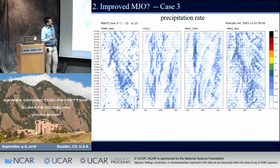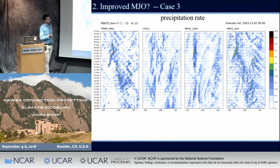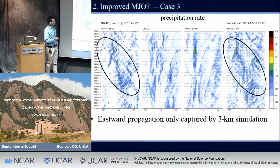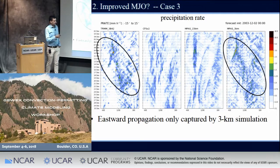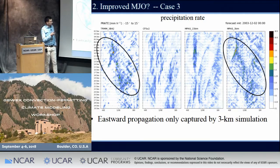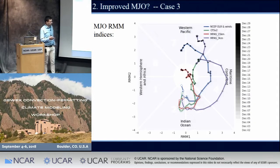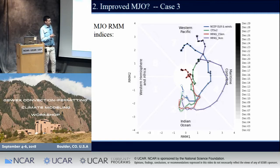Finally, here's our third MJO case, characterized by a very broad packet of precipitation moving eastward. Both CFS and the 15-kilometer MPAS primarily produce stationary precipitation, while in the 3-kilometer run we see a really nice broad eastward-propagating packet, even capturing the sort of intense westward-propagating signal we see in TRMM. Compared to the other two, it does much better at capturing this event, which you can also see in the RMM, although the RMM amplitude is a little elevated in our 3-kilometer run.